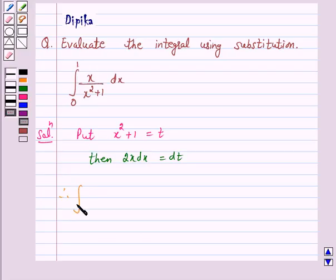Therefore, integral x upon x square plus 1 dx is equal to... Now, 2x dx is equal to dt. Therefore, x dx is equal to 1 by 2 dt. And x square plus 1 is equal to t. So, the given integral is equal to 1 by 2 integral of 1 by t dt.